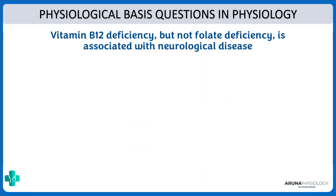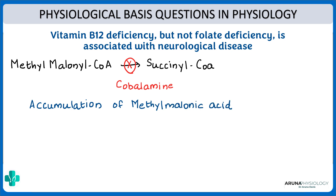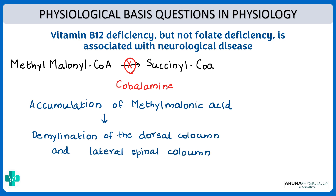Here comes an important physiological basis question: vitamin B12 deficiency but not folate deficiency is associated with neurological disease. Why? Vitamin B12 is a cofactor for one more reaction — methylmalonyl-CoA must be converted to succinyl-CoA, and for this you need cobalamin. When there is deficiency of vitamin B12, this reaction does not take place, leading to accumulation of methylmalonic acid. This methylmalonic acid is responsible for demyelination of the dorsal column and lateral spinothalamic tract, causing neurological symptoms.